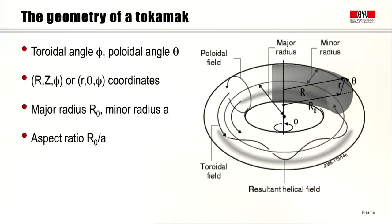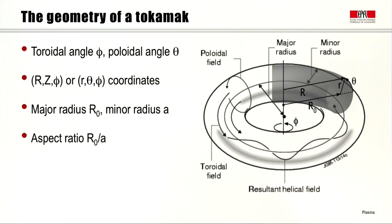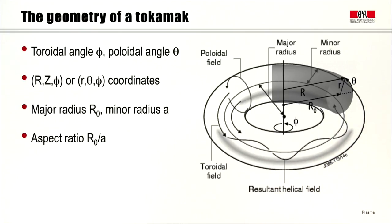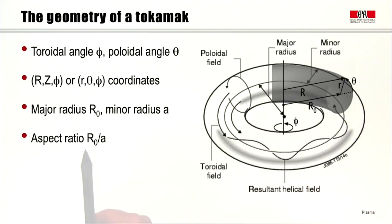We can describe the tokamak geometry using two systems of coordinates. The first is a quasi-Cartesian coordinate system R, Z, phi — R the radial direction, Z the vertical coordinate, phi the toroidal angle. Or we can use quasi-cylindrical coordinates: small r, theta, phi — where small r is the radius of the poloidal cross-section, theta is the poloidal angle, and phi is again the toroidal angle. R0 is the major radius, a is the minor radius of the last surface, and the ratio R0 over a is the aspect ratio of a tokamak.